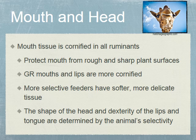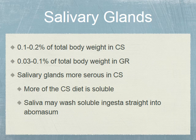For example, a giraffe when browsing has a long tongue that reaches around branches and trees to select what it wants. Animals with more nimble heads are typically your concentrate selectors, while animals with big bulky heads are typically going to be grazers.